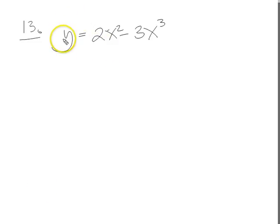Okie dokie guys, let's have a look at 13 then. We've got y equals 2x squared minus 3x cubed. Let's get the gradient function first before we find the turning points.